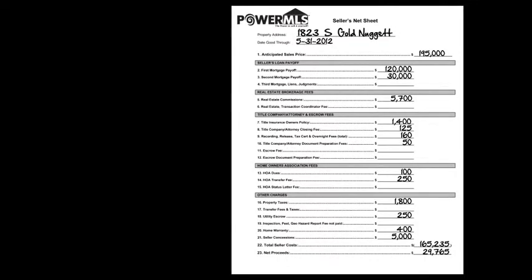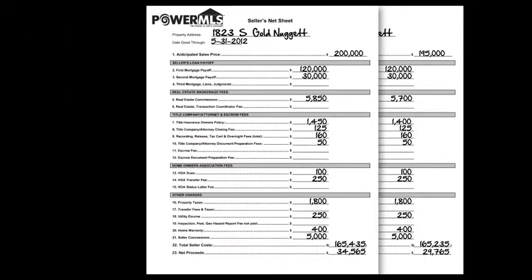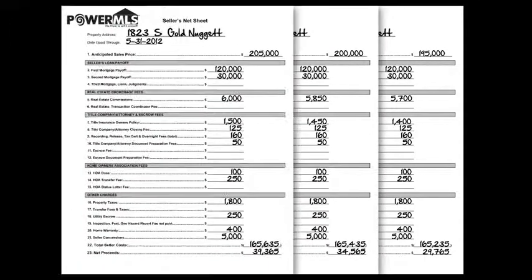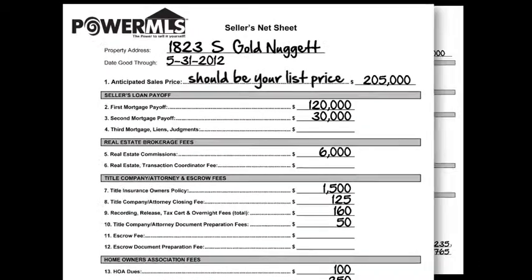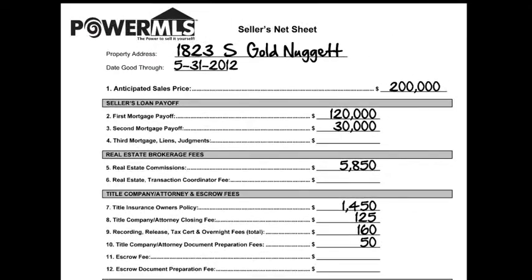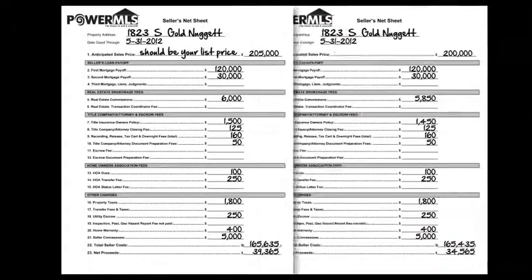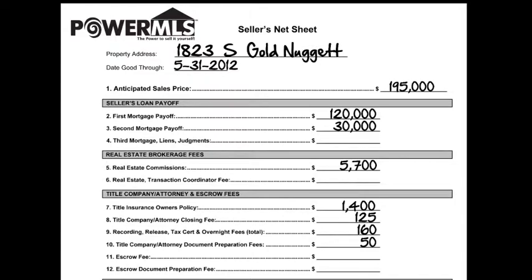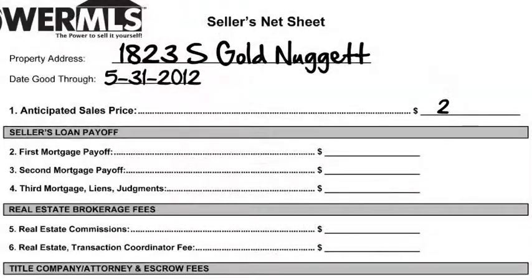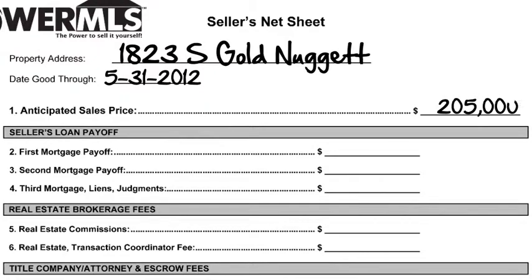For my clients, I always prepare three net sheets, each in $5,000 increments from the list price. The first net sheet uses the list price as the anticipated sales price. The second net sheet uses the list price minus $5,000. The third sheet uses the list price minus $10,000 as the anticipated sales price. For this example, let's use a sales price of $205,000.